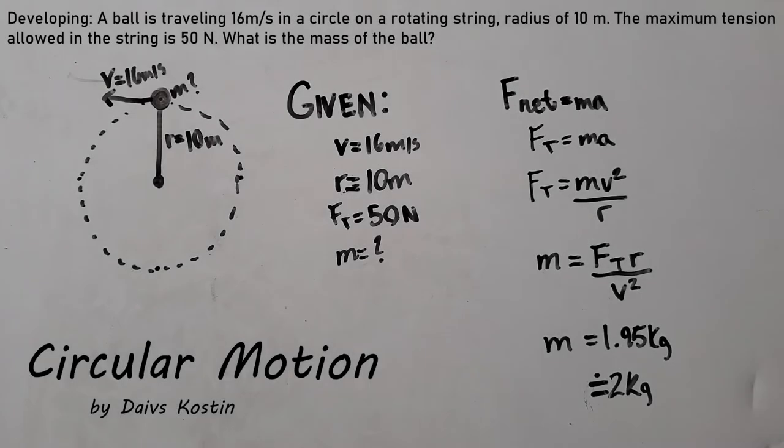To start off with a quick introduction, in physics, circular motion is a movement of an object along the circumference of a circle or rotation along a circular path. Knowing that, let's get into the first question.